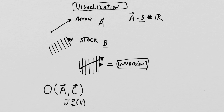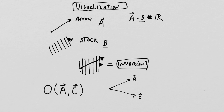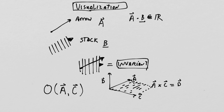We don't necessarily have to get a real number out — we just have to get something that's invariant. From elementary physics, we were happy to take an arrow and an arrow and create the cross product. If I called them A and C, A cross C equals another arrow D. D was perpendicular to A and C, and had a magnitude equal to the area of the subtended parallelogram.